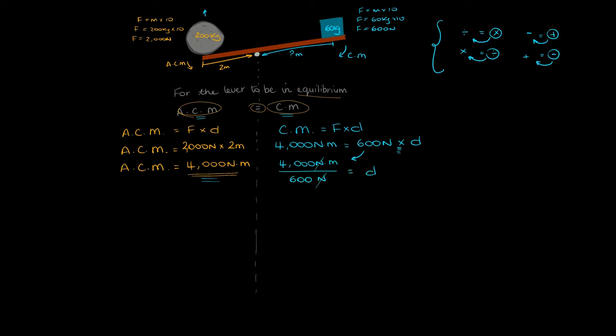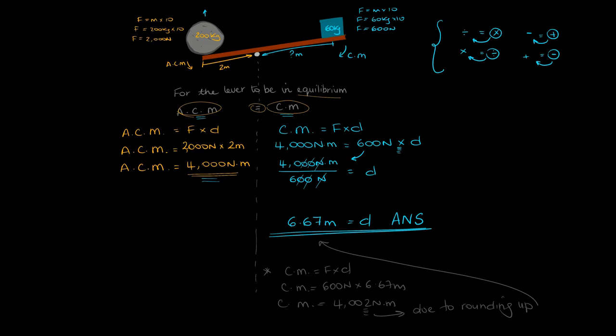So back to our equation. We'll move 600 Newtons to the other side of the equation so that it becomes a division. We'll divide the moments by the force, and the resultant answer will be our distance. A good thing to note is that since we normally round up our numbers to two decimal places, we might lose some accuracy as can be shown in this working. So always be aware of that.